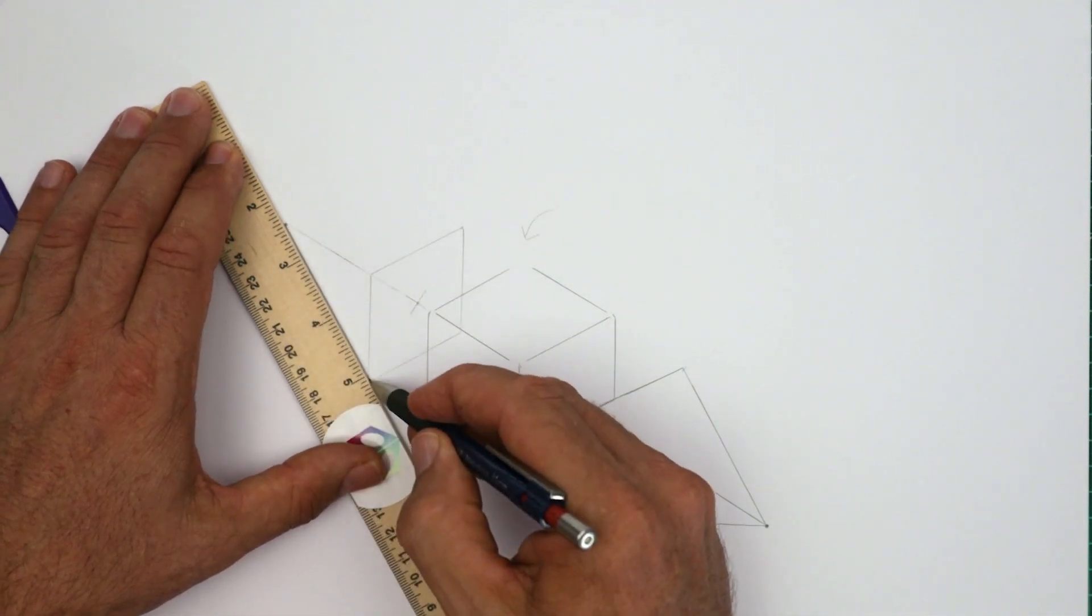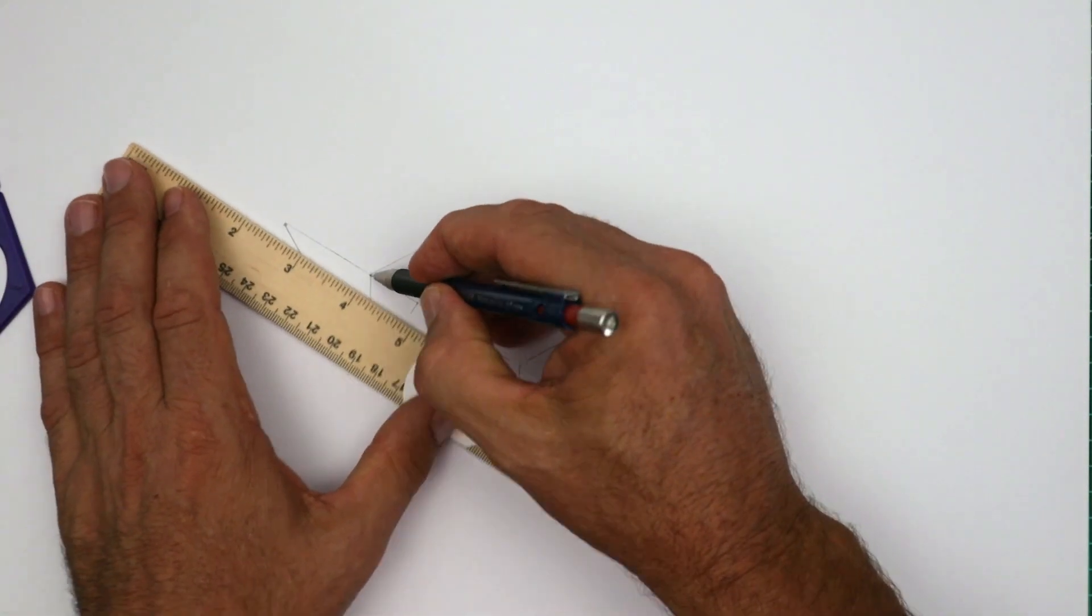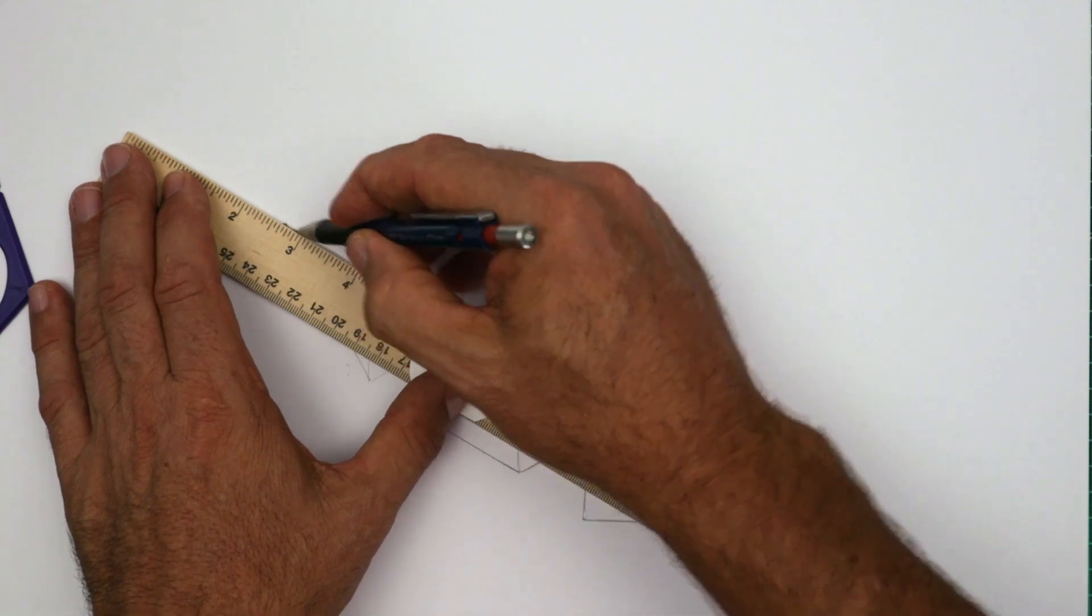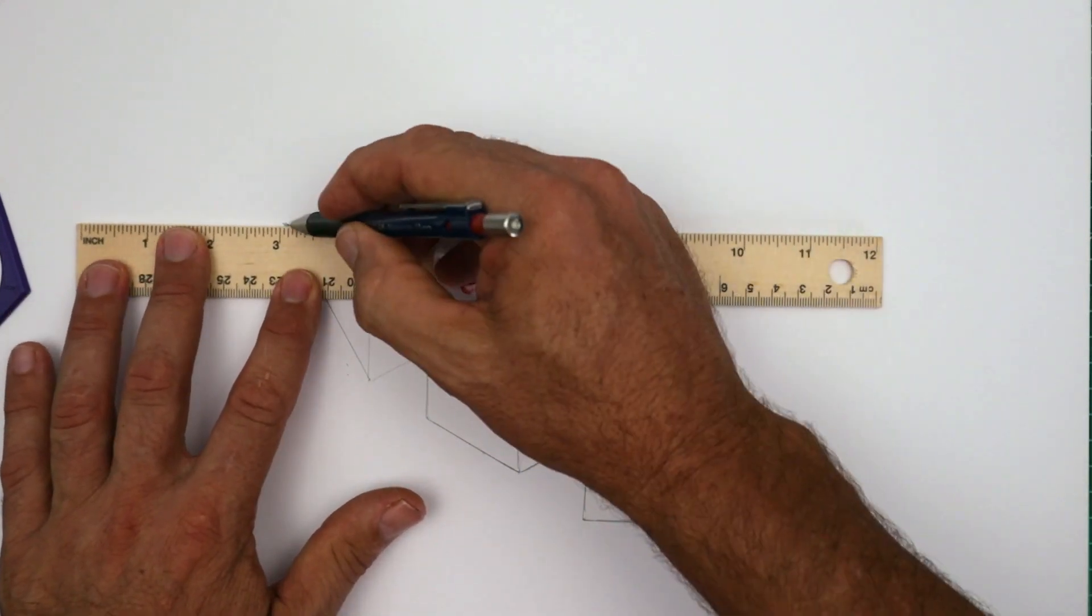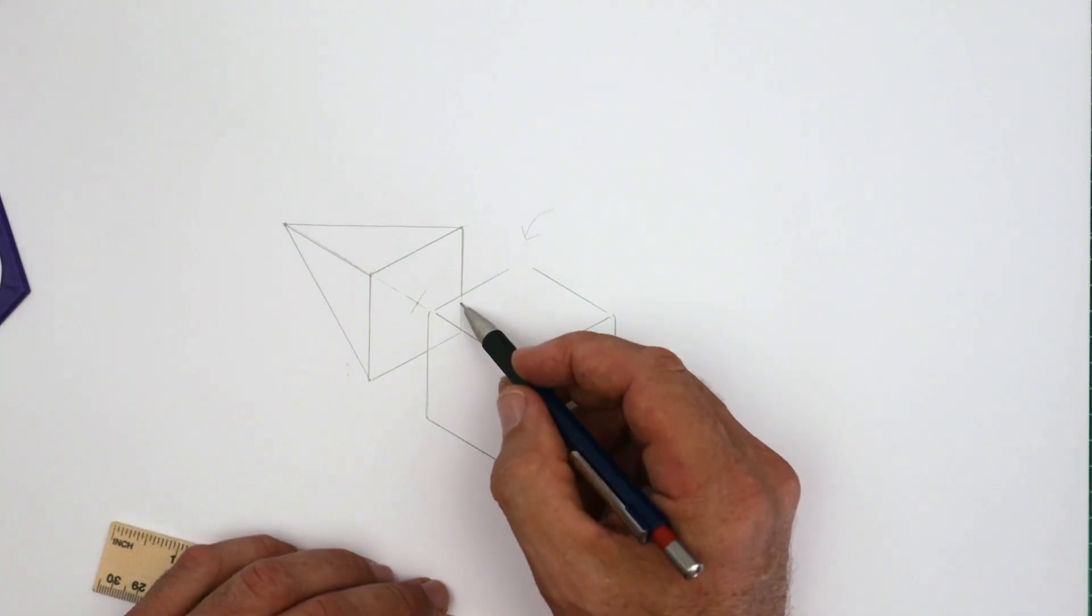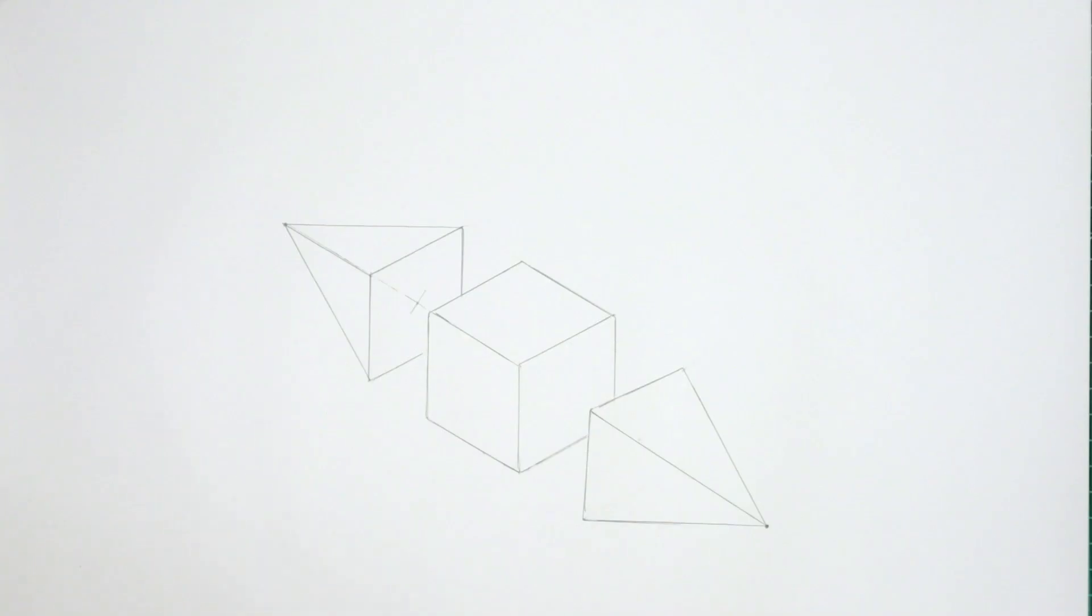And again, we're drawing the edges of the pyramid in. Line it up with the three corners of the base. Great. We're halfway there. How cool is that?